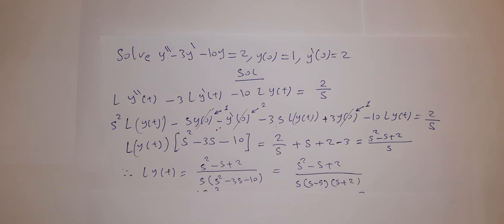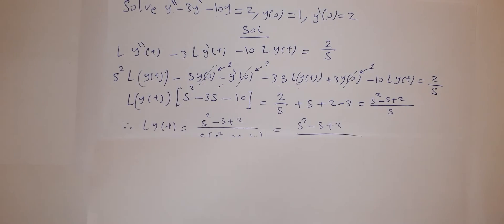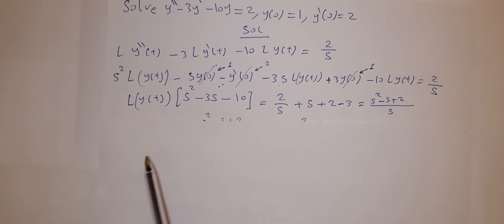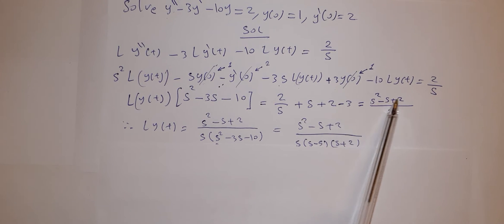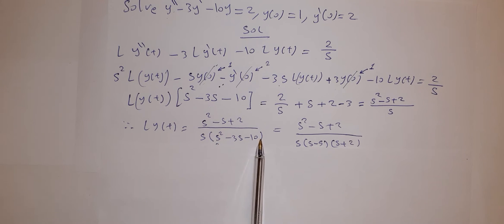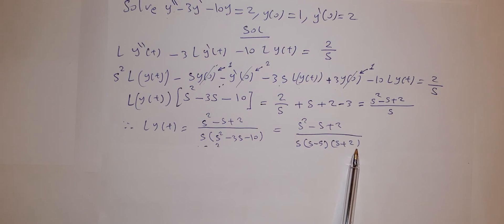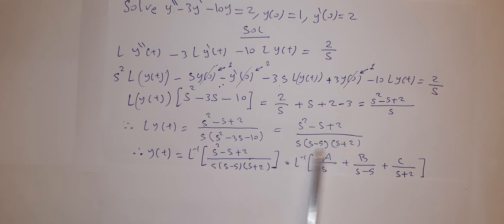So L{y(t)} equals (s squared minus s plus 2) divided by s times the bracket. We can factorize the bracket as (s minus 5)(s plus 2). Now to get y(t), we apply the inverse Laplace transform.